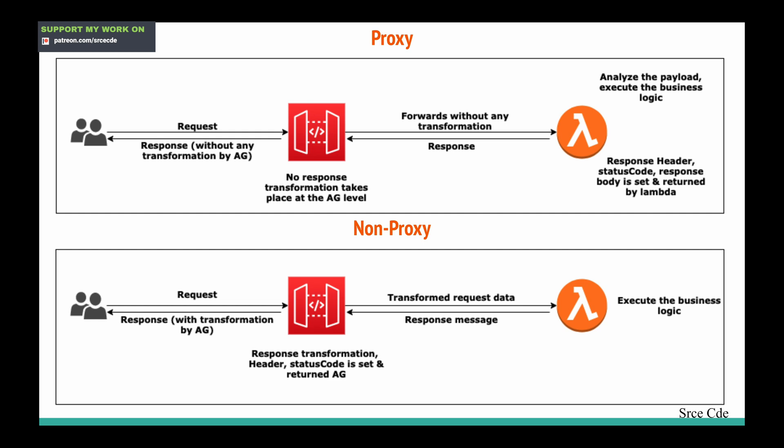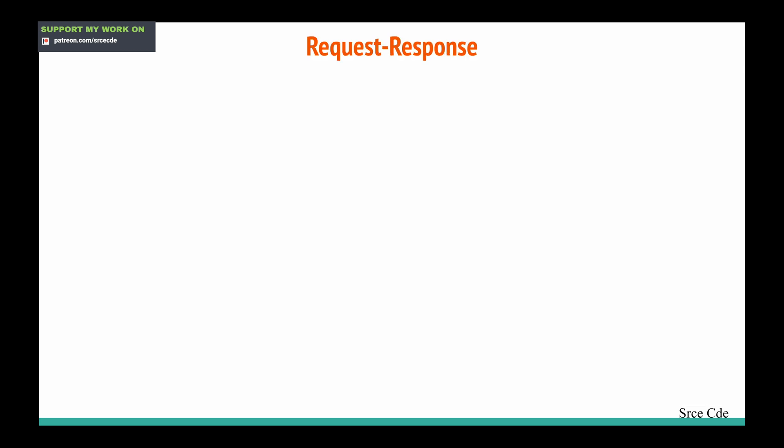Within the Lambda function, it's only going to execute the business logic and return the response message to the API Gateway. Once the response data is within API Gateway, it is able to transform the return response and set the response header and status code. Finally, the transformed response will be returned back to the client. This is basically the basic difference between proxy and non-proxy integration.